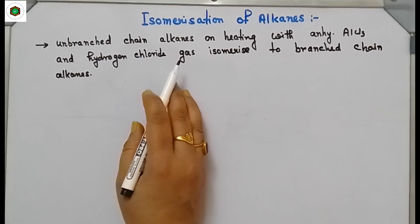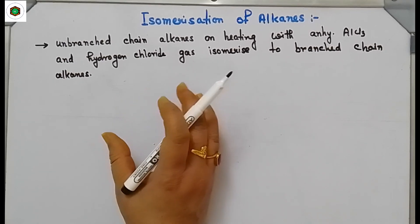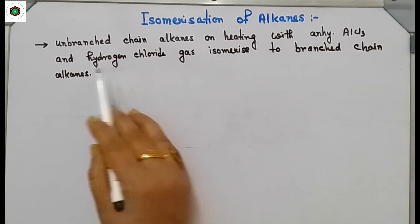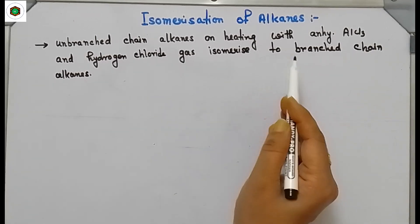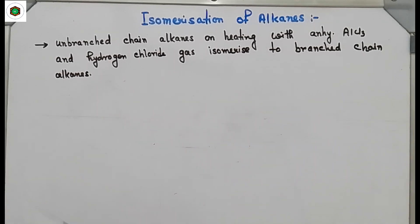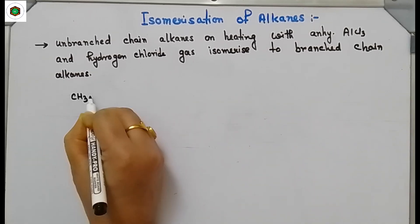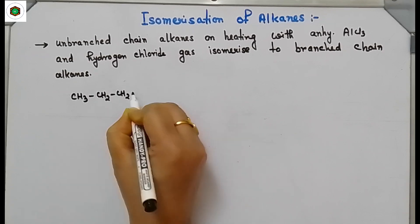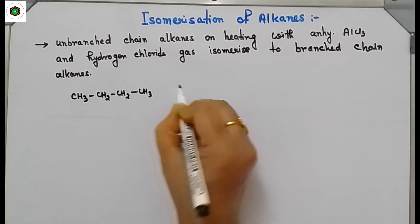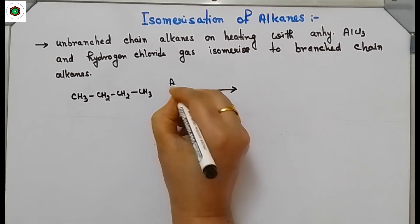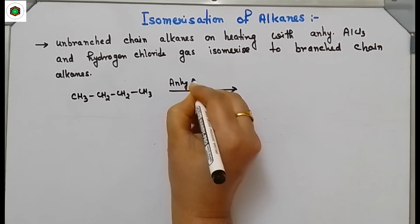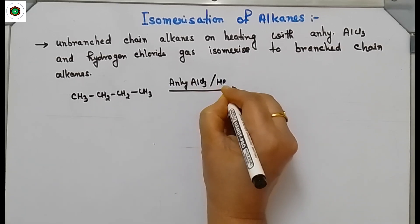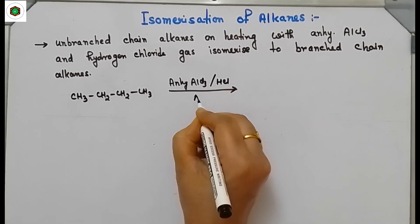Unbranched alkanes, for example N-butane and N-hexane, on heating with anhydrous aluminum chloride and hydrogen chloride gas, isomerize to branched alkanes. Take N-butane and treat it with anhydrous aluminum chloride and HCl gas. You have to heat it.